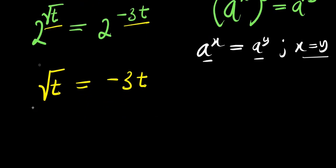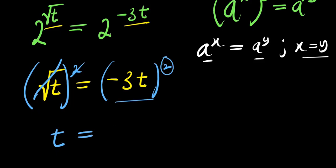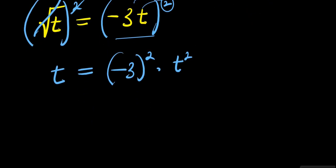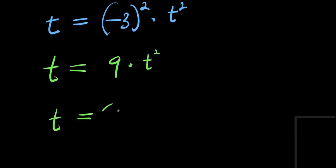What we are going to do is take the square of both sides of this equation. This eliminates the square root. On the right, we need to distribute the exponent to each of the terms: negative 3t squared times t squared gives us negative 3t squared, which is 9t squared times t. So we have t equals 9t squared.